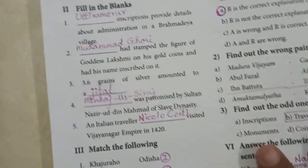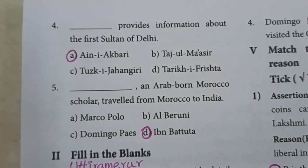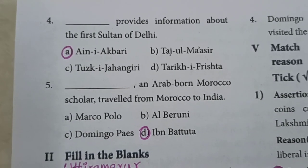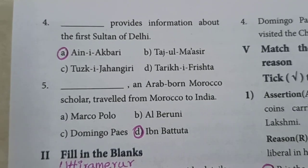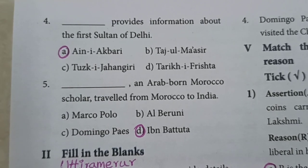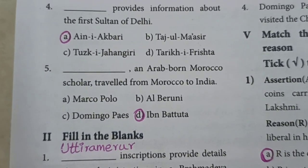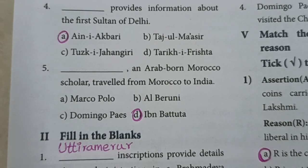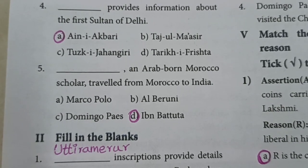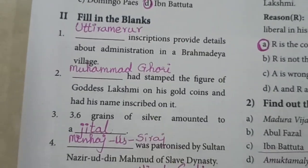Question number four: Dash provides information about the first sultan of Delhi. The answer is A — Aini Akbari. Fifth question: Dash, an Arab born Morocco scholar, travelled from Morocco to India. The answer is D — Ibn Battuta.